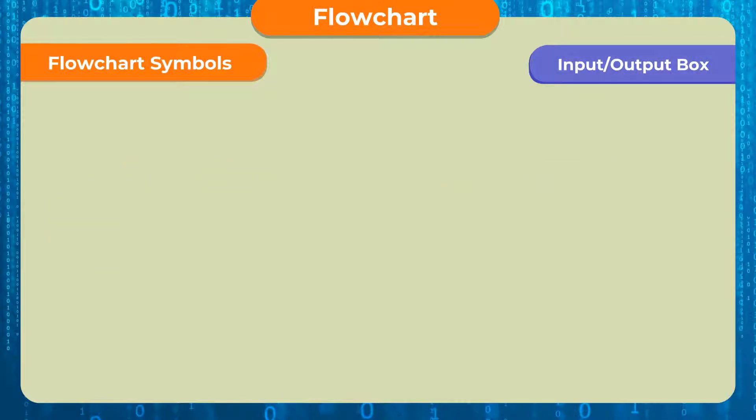Input output box. The input output box in a flowchart is just like a parallelogram in shape. To make any type of input in the computer or to display any type of output, this box is used. The statements like input, print, etc. of basic language are used to type inside this box.